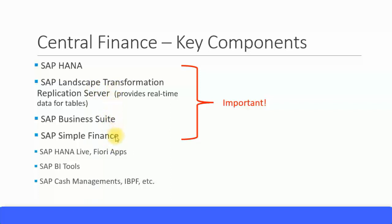So these four important installations are required for Central Finance: SAP HANA, SAP Landscape Transformation Replication Server, SAP Business Suite, and SAP Simple Finance. Additionally, SAP HANA Live, Fiori apps, and SAP BI tools are mostly for reporting purposes — not compulsory, but good to have for better reporting options. You can also optionally install SAP Cash Management and SAP IBPF, which are separate licensing and optional components for your Central Finance implementation.